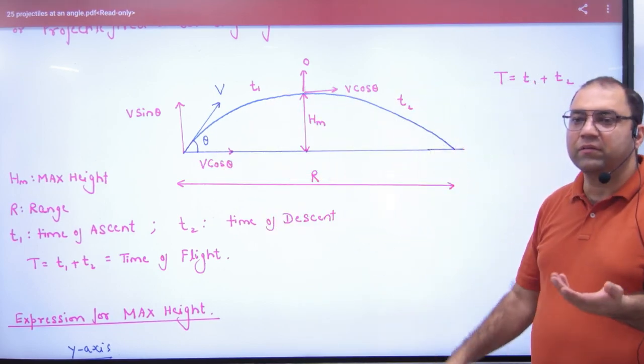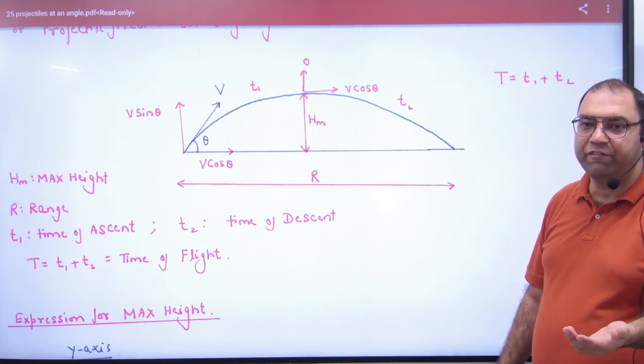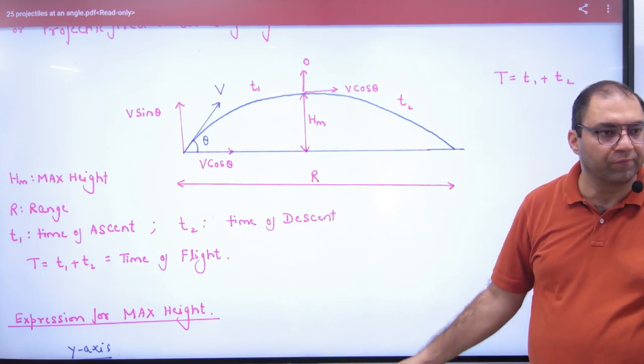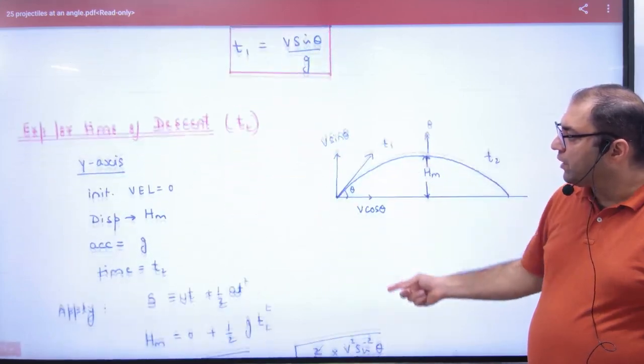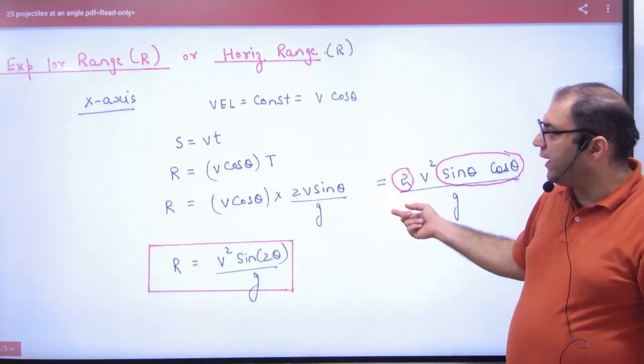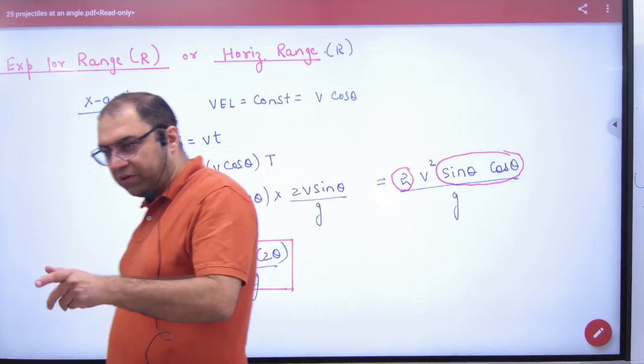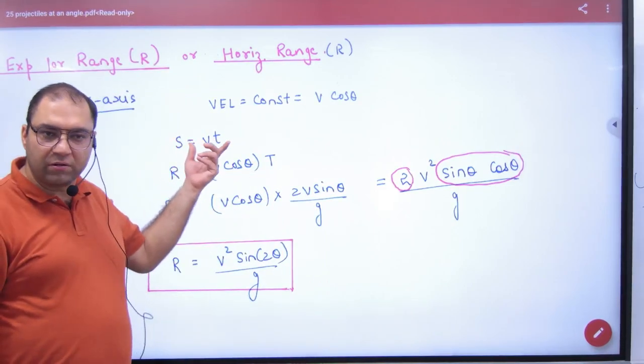And how much time will the body take, the time of flight? t1 plus t2. So in the range, you will do the work. In the range of x-axis, velocity constant v cos theta. Now you apply the equation s equals vt.